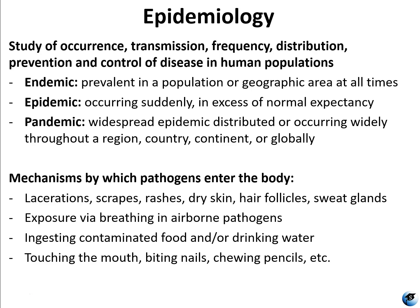Mechanisms by which pathogens enter the body include lacerations, scrapes, rashes, dry skin, hair follicles, and sweat glands. We've already talked about skin and lacerations; bacteria can also enter your pores and sweat glands — which is how you get acne. Very rarely, things can penetrate the skin, like hookworm. You can also breathe in an airborne pathogen; your respiratory system produces mucus to help trap airborne microorganisms. And you can ingest contaminated food or drinking water, such as with food poisoning or fecal-oral pathogens like cholera.